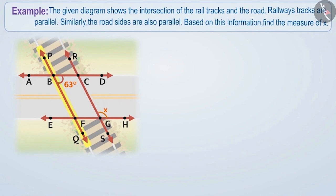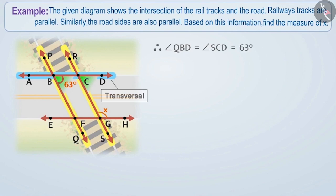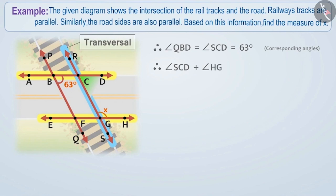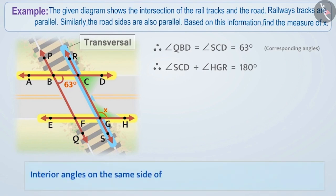For example, line PQ and line RS are parallel and line AD is their transversal line. We can say that angle QBD is equal to angle SCD is equal to 63 degrees because they are corresponding angles. Similarly, lines AD and line EH are parallel and RS is their transversal line. Here we can say that angle SCD plus angle HGR is equal to 180 degrees, because interior angles on the same side of the transversal are supplementary.